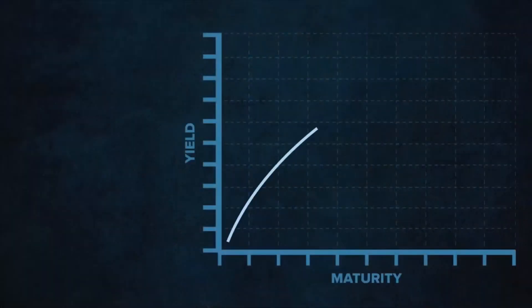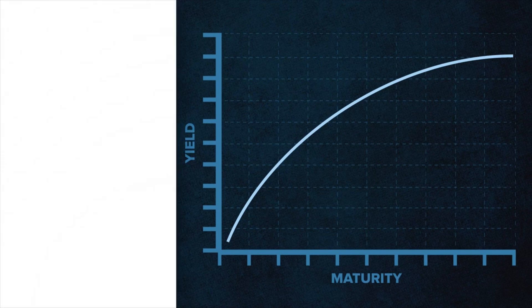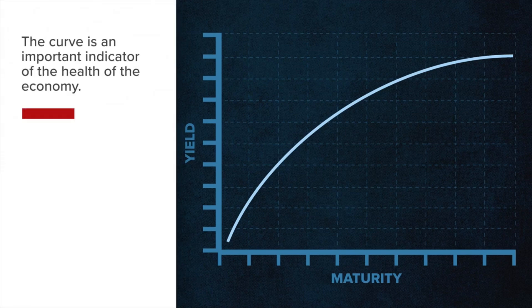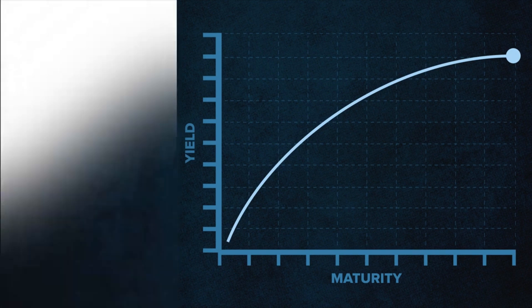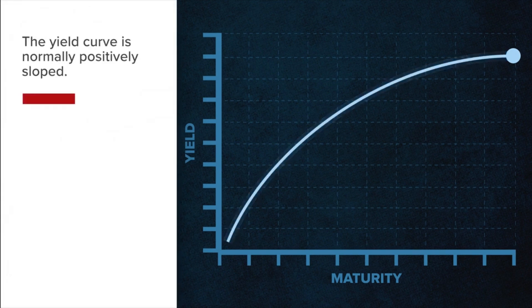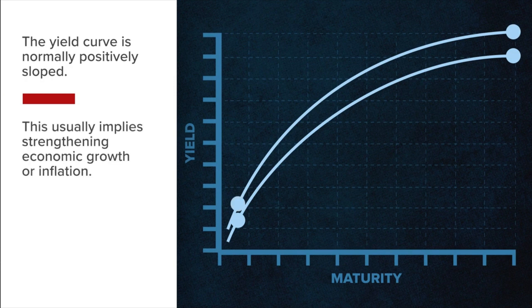The curve gives us important insights regarding expectations for economic growth and helps us understand where we are in the economy and where we may be headed. Due to the time value of money, it typically costs more to borrow money for a longer period of time. The yield curve is normally positively sloped, implying that it costs more to borrow for longer time periods than in the short term. When the yield curve steepens, the cost of borrowing at far-dated maturities rises by more than the cost of borrowing in the short term, which usually implies strengthening economic growth or inflation.